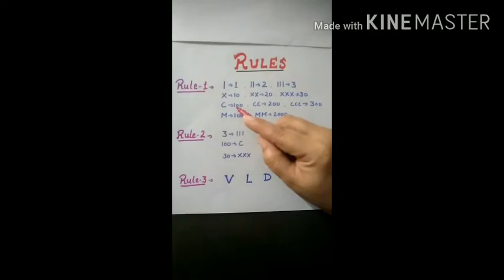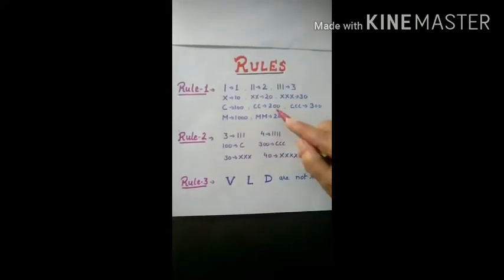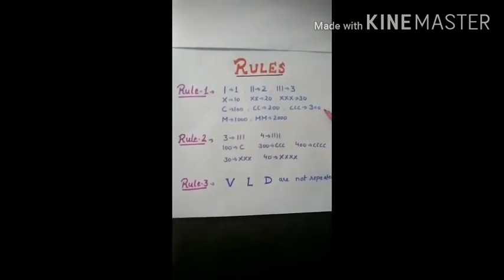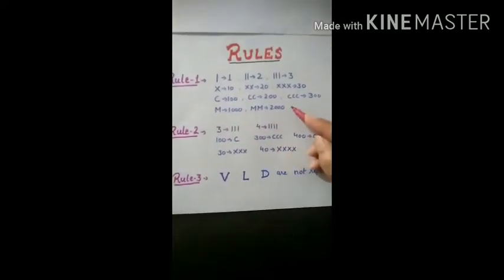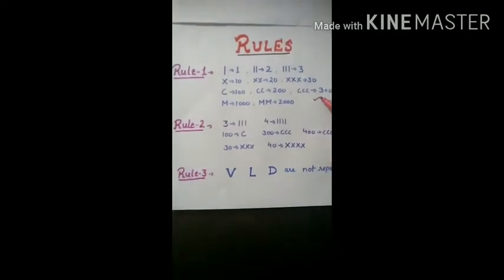Same, one C is 100, two C is 200, three C is 300. This means if we are repeating the symbol, this represents the addition of the number.